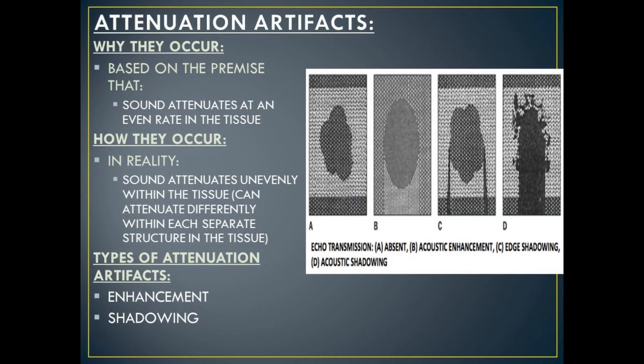Attenuation artifacts occur based on the premise that sound attenuates at an even rate in the tissue. Attenuation is the decrease in the strength of a sound wave as it travels further and further into the tissue. In reality, sound attenuates unevenly — it can attenuate differently within each separate structure in the tissue. Types of attenuation artifacts include enhancement and shadowing. These artifacts can both help ultrasound by characterizing masses in the breast, and also hinder it, especially shadowing, in that it can obscure pathology.